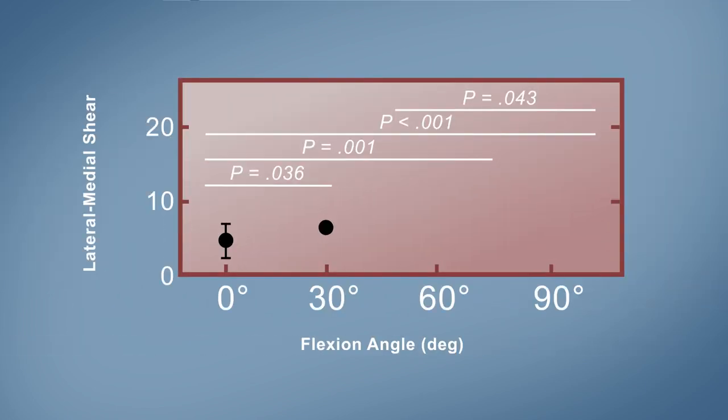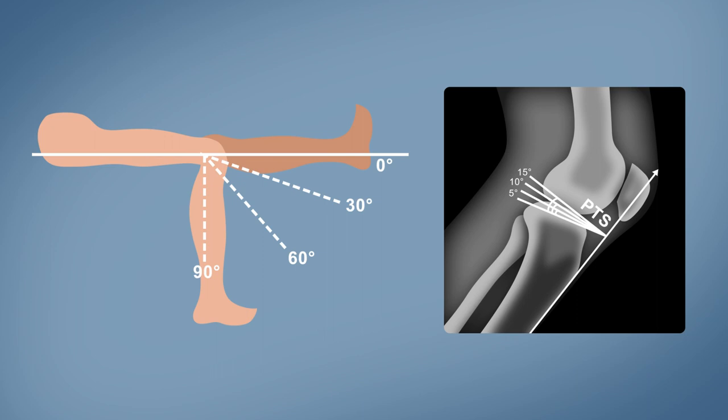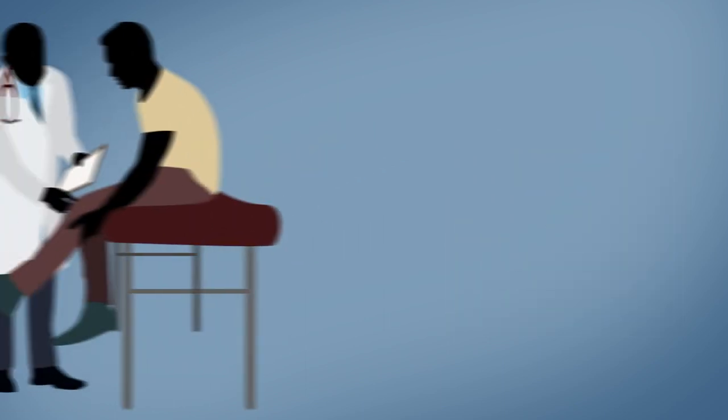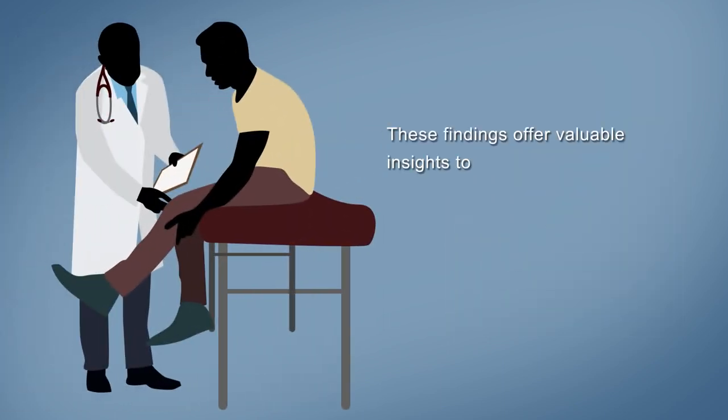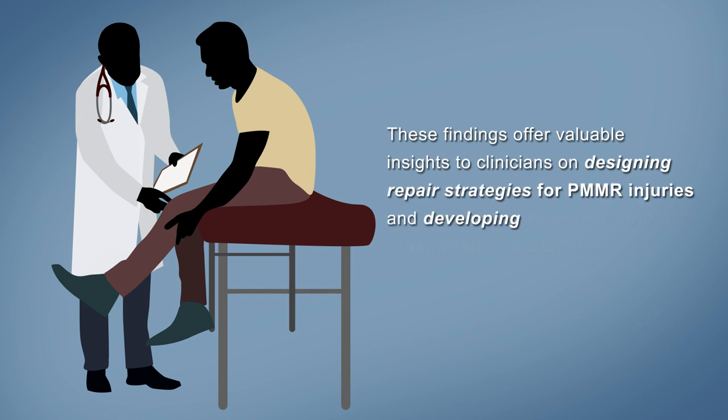Additionally, under compression, medial shear forces on the PMMR increased significantly with knee flexion angle. This demonstrates how tibial slope and knee flexion can potentially affect the forces experienced by the PMMR, thus influencing injury risk. These findings offer valuable insights to clinicians on designing repair strategies for PMMR injuries and developing safer postoperative rehabilitation protocols.